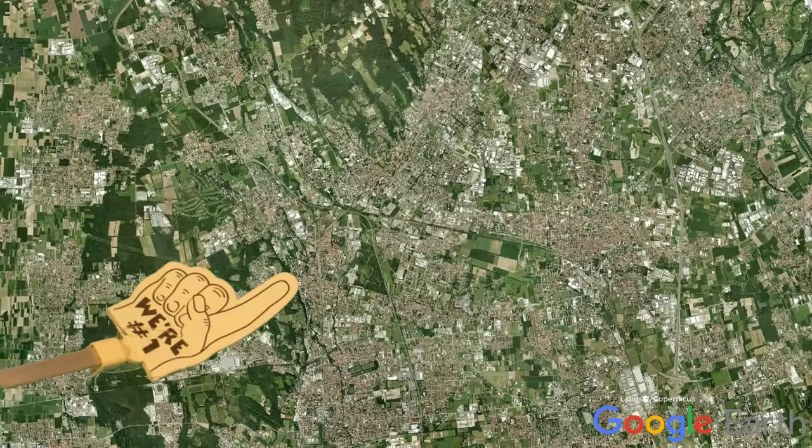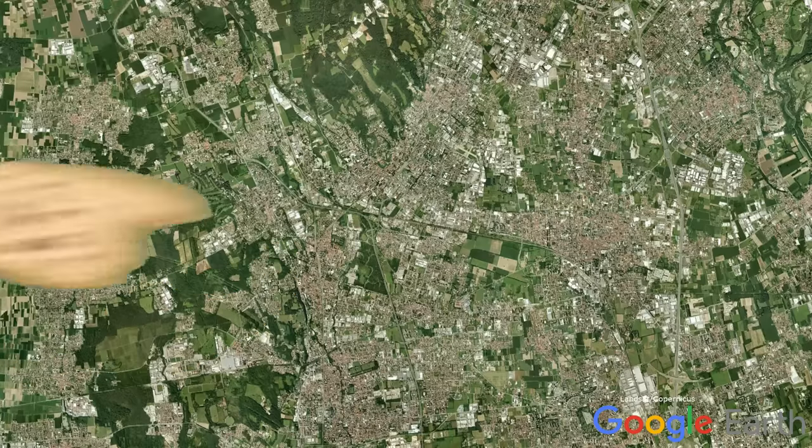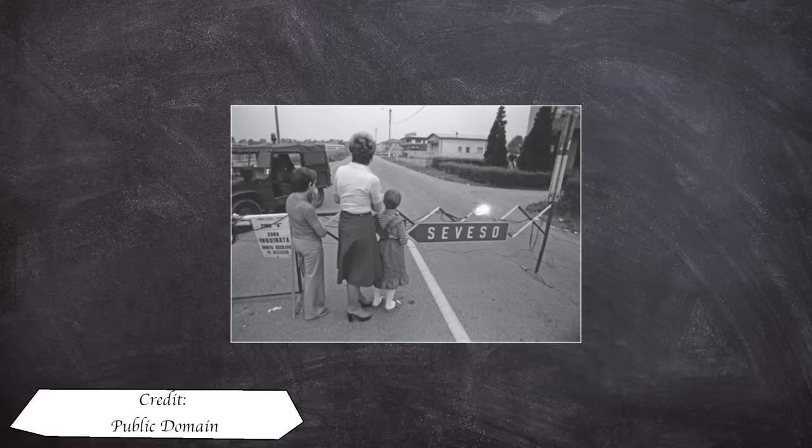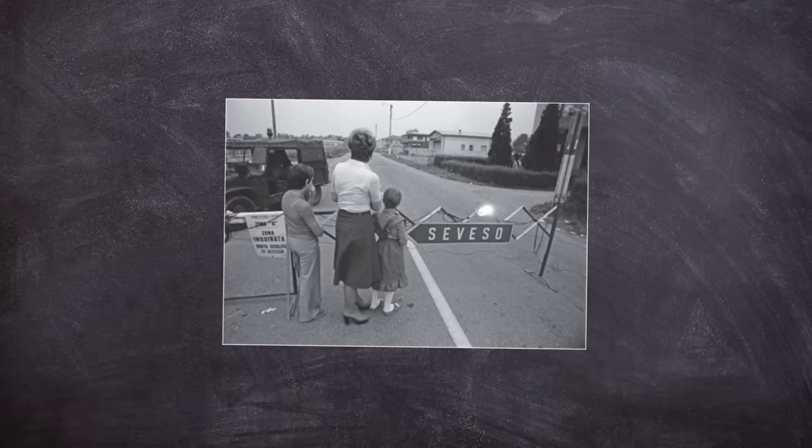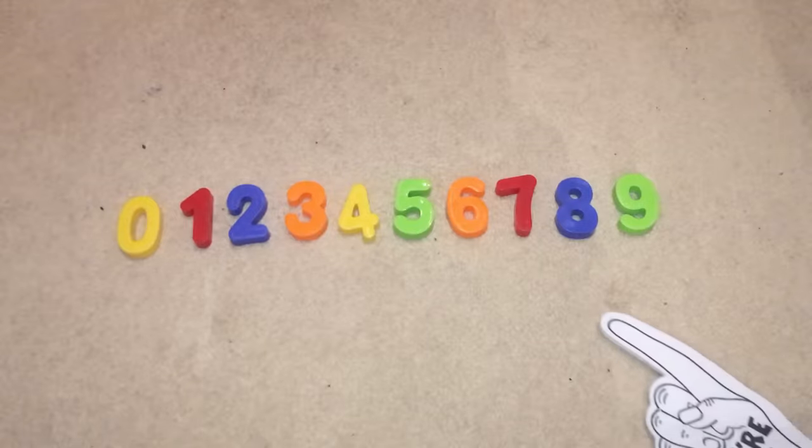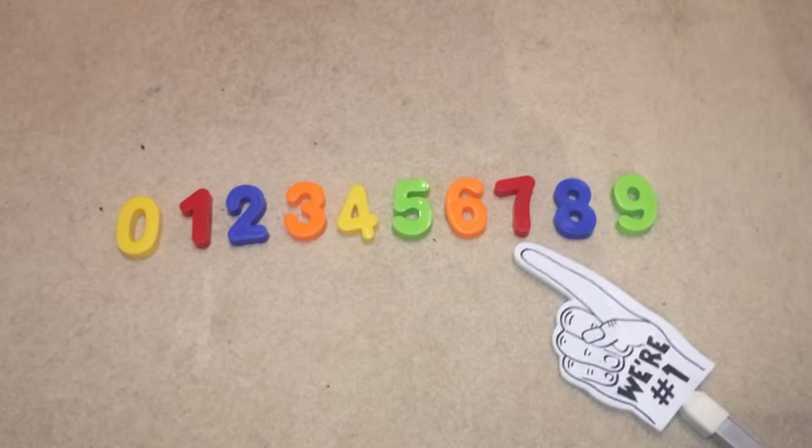Seveso is an Italian town in Northern Italy, 13 miles north of Milan, and in the mid-70s had a population of around 17,000 people. Ultimately, this population would be the largest to be directly exposed to dioxin. Today I'm going to rate this disaster here on my Plainly Difficult Disaster Scale.